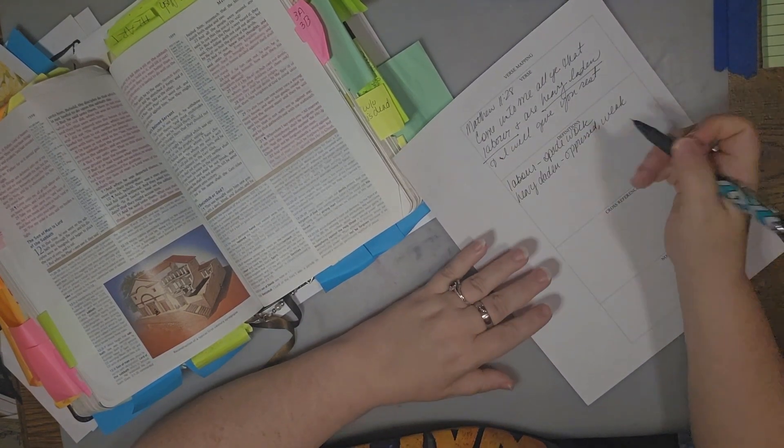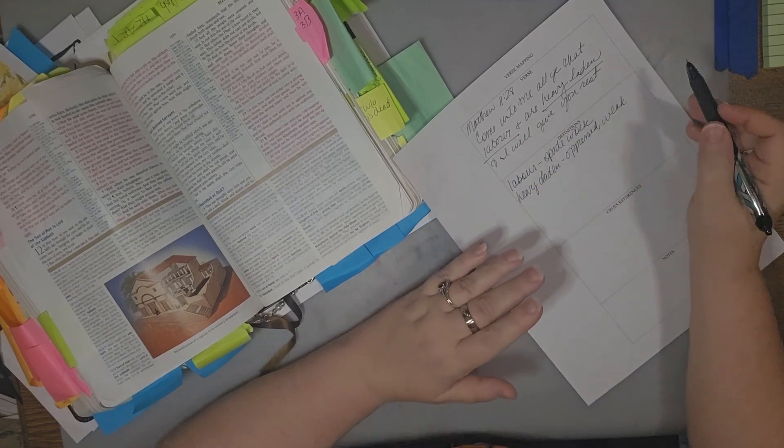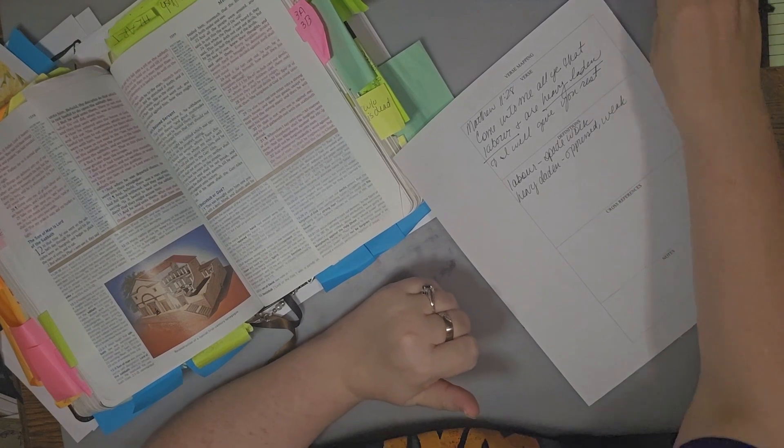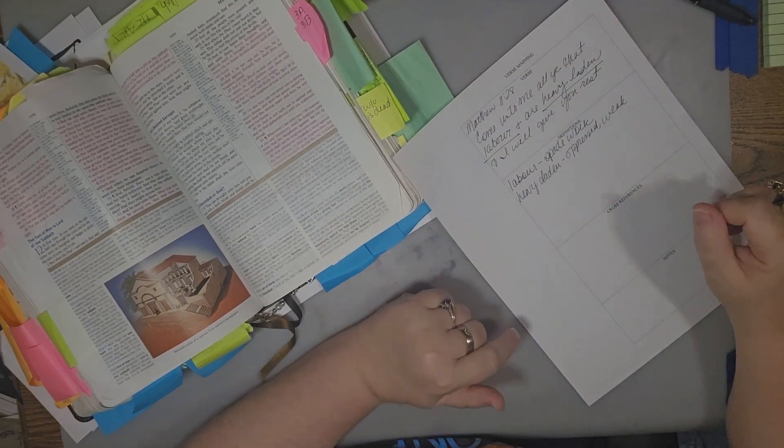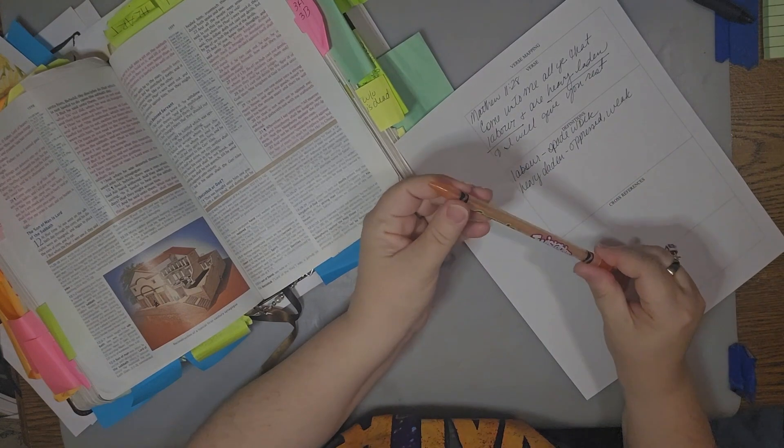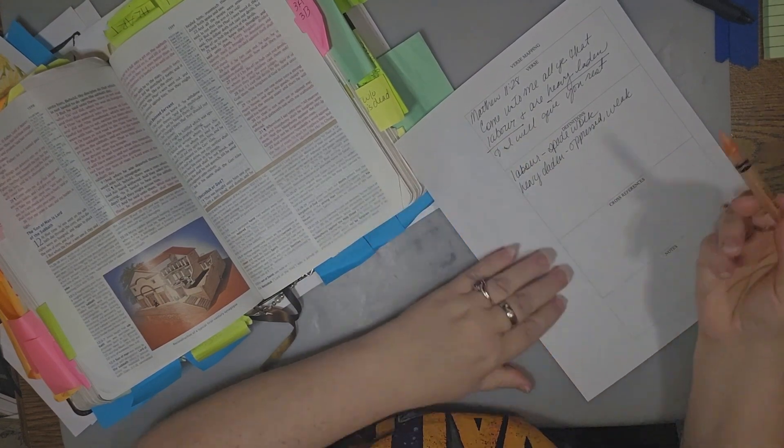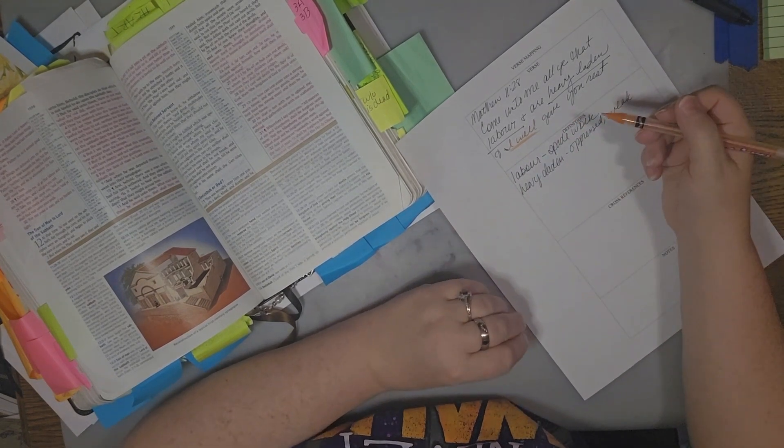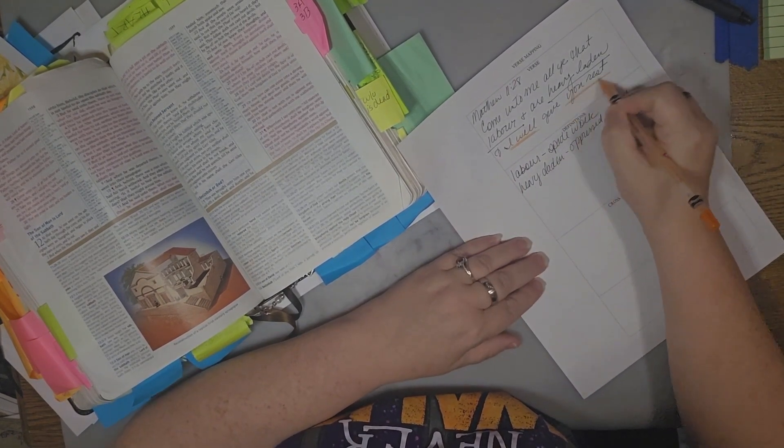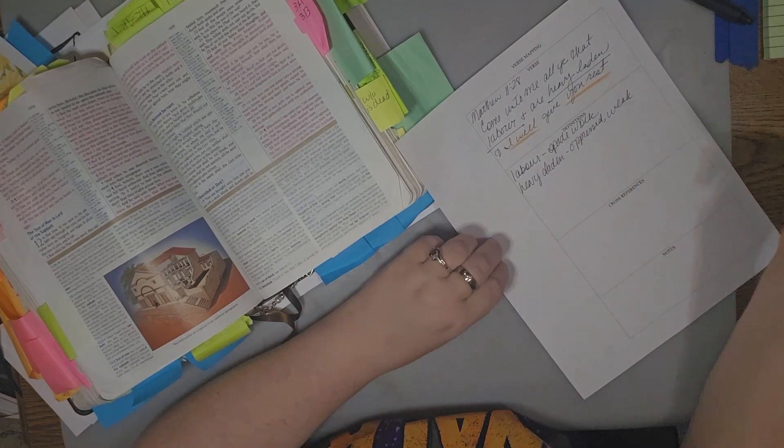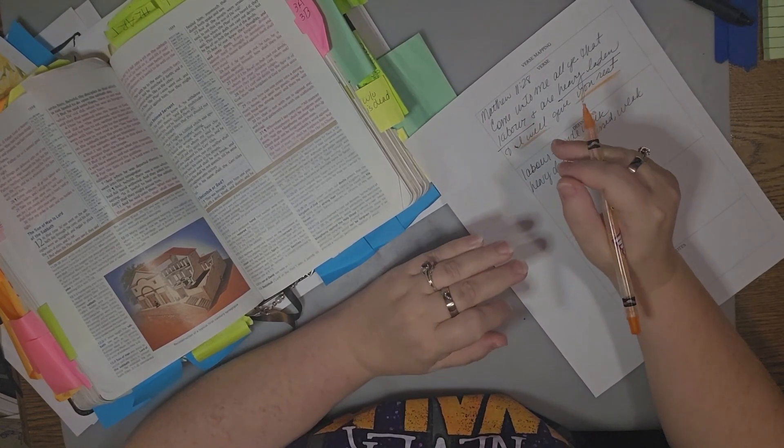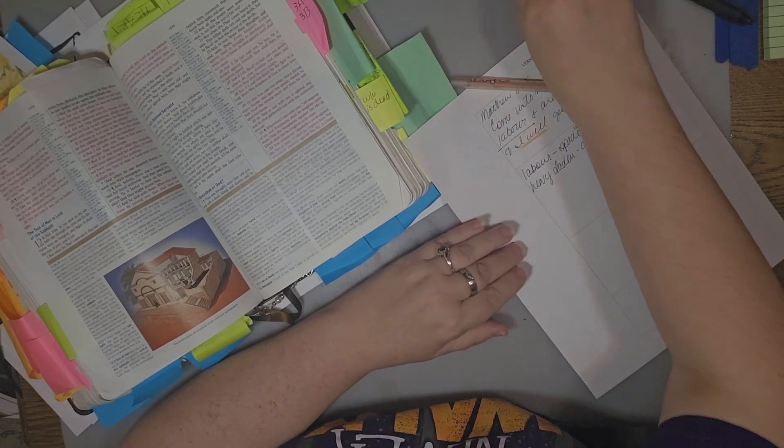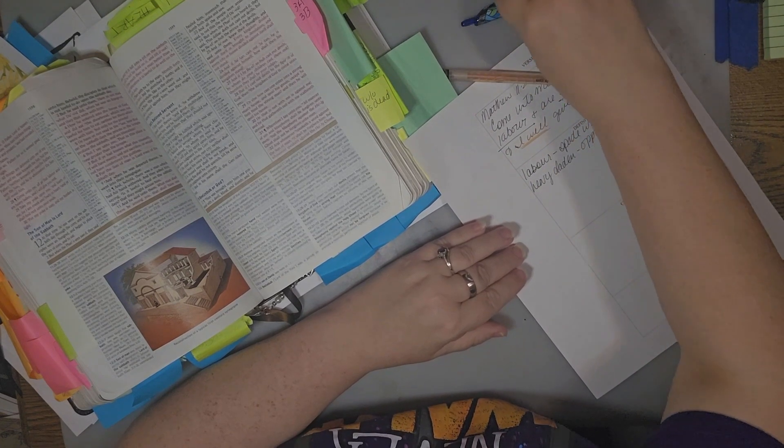That's when we need to lay it upon the foot of Jesus at the cross. He says, I will give you rest. Now this is a promise. Remember I talked to you about I shall, I will - that's a promise that he has given us. And I normally mark that in orange. It's a little orange here. This is a promise here.